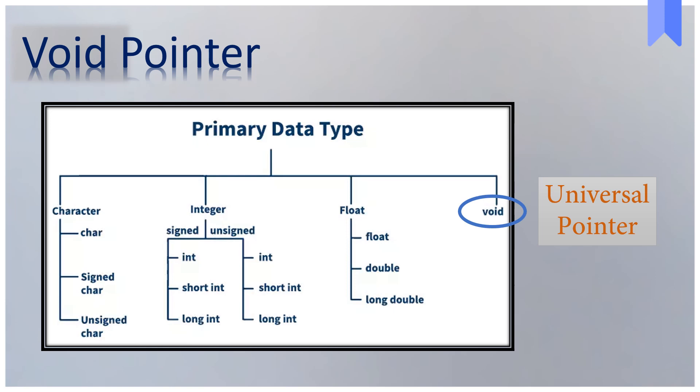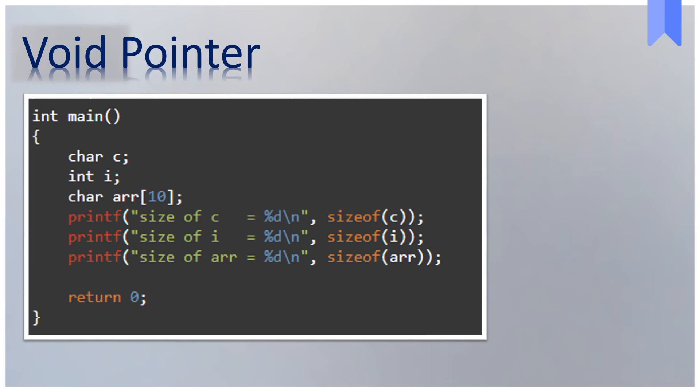Let's see how this universal pointer works. Let's define three different objects: a character, an integer variable, and a character array of 10 bytes. If we try to print the memory occupied by each of these objects, we will get they occupied different sizes in memory. A character variable takes 1 byte, an integer variable takes 4 bytes, and the character array will occupy 10 bytes, which is as expected.